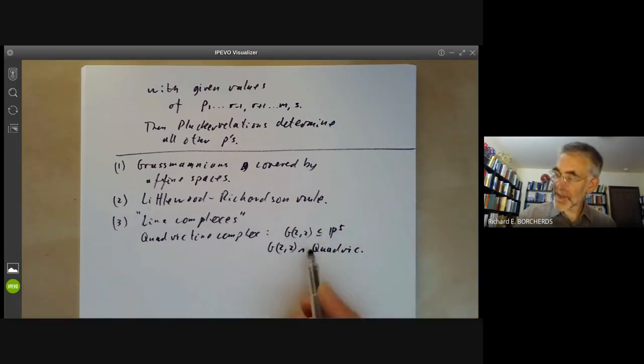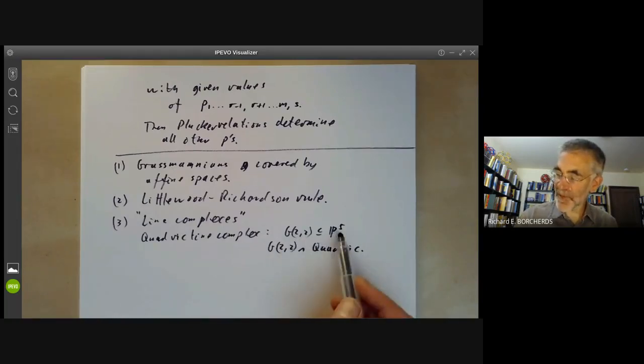So this G22 is four dimensional. So if you intersect it with a random Quadric in P5, this gives you a three dimensional variety called a Quadric Line Complex. And you can get things like cubic line complexes by replacing it with a cubic and so on. If you've got the book Griffiths and Harris on Algebraic Geometry, you may notice the final chapter is entirely about the Quadric Line Complex.